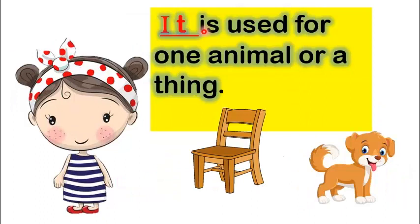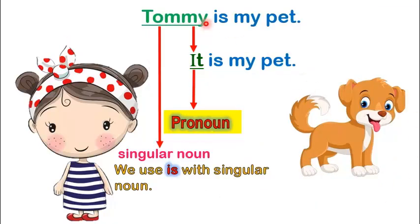It. It is used for an animal or a thing. This is Tommy. Tommy is my pet. We can also say, it is my pet. It refers to Tommy. So, it is a pronoun that can be used for animals.